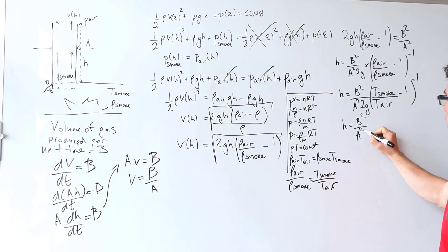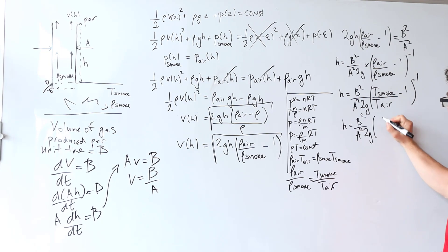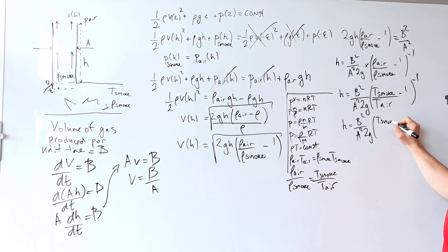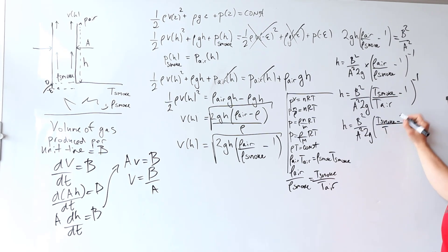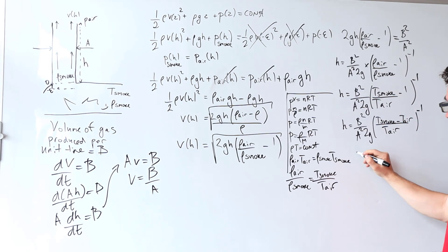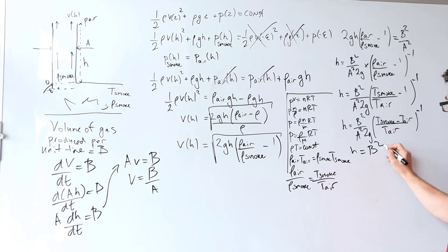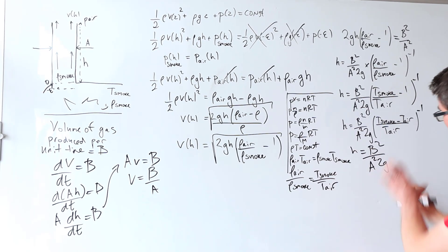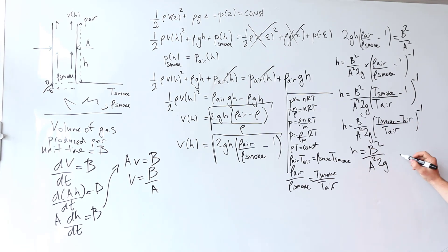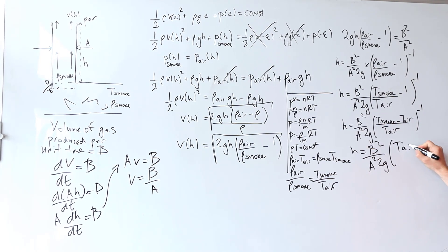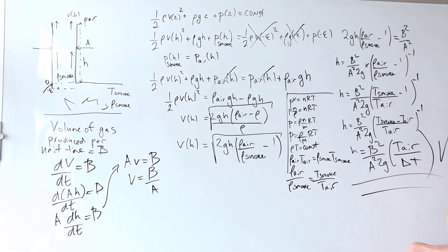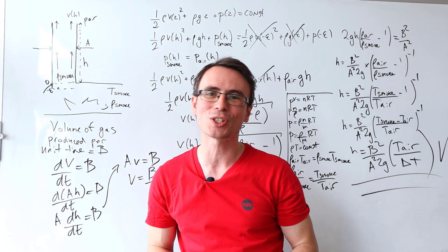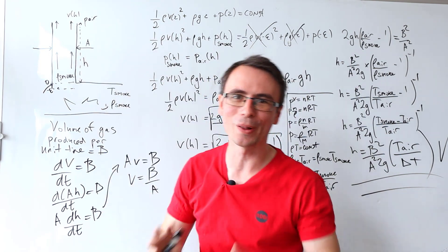h is b squared over a squared 2g, let's flip this fraction, finally multiplied by the T air divided by the change in temperature, and this right here is the minimum height of this chimney considering all of those assumptions.